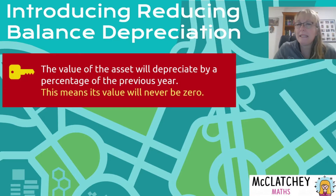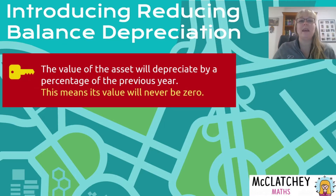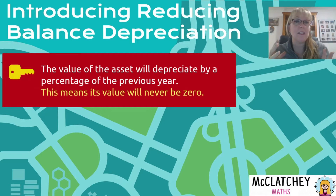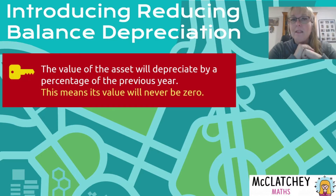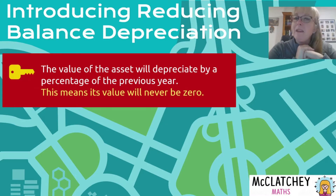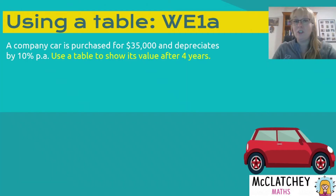With the reducing balance method, the value of the asset depreciates by a fixed percentage. So instead of a fixed dollar amount like reducing by $5,000 a year, it might reduce by 2% per year. It's not 2% of the starting balance — it's 2% of the previous year's balance. Because that balance is declining over time, the amount of depreciation will also decline over time.